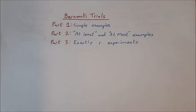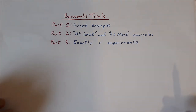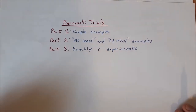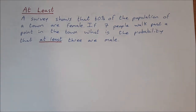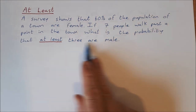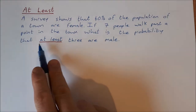Welcome to part two of the Bernoulli trials videos. This is going to focus on questions that have 'at least' and 'at most' in them. So let's have a look at our example: a survey shows that 60% of the population of a town are female. If seven people walk past a point in the town, what's the probability that at least three of them are male?